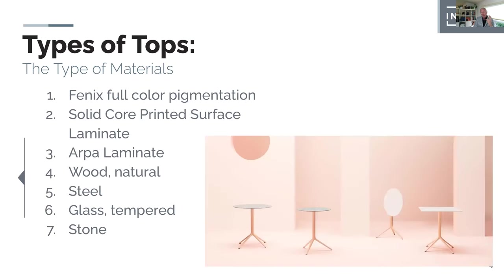Now going to the seven categories. I'll be talking a lot about Phoenix. Phoenix is a brand under the big company called ARPA. ARPA is the Italian equivalent of Wilson Art, Nevomar, Formica - and Phoenix is a material that gives us full color pigmentation all the way through the material.